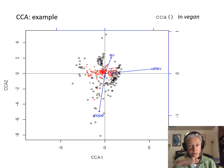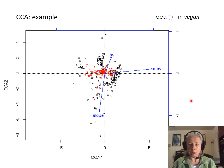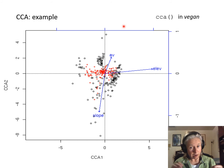In this particular case, the first axis, the horizontal axis, is associated with increasing elevation because the elevation vector increases as you go from left to right. Whereas the second CCA axis, the vertical axis, is associated with decreasing slope and increasing aspect value. But of the three variables, notice in terms of arrow length, aspect value is the least influential of the three.